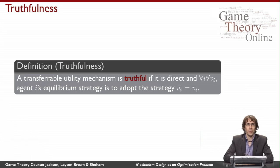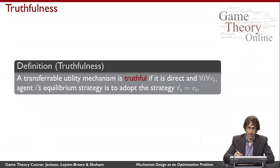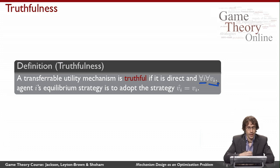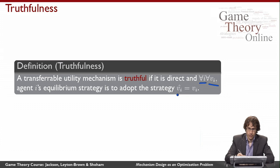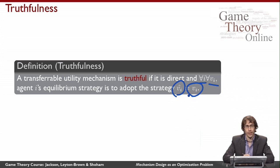A transferable utility mechanism is said to be truthful if it is a direct mechanism, and if for all agents and for all valuations that each agent might have, agent i's equilibrium strategy is to disclose truthfully — to make his disclosure equal to his actual value.